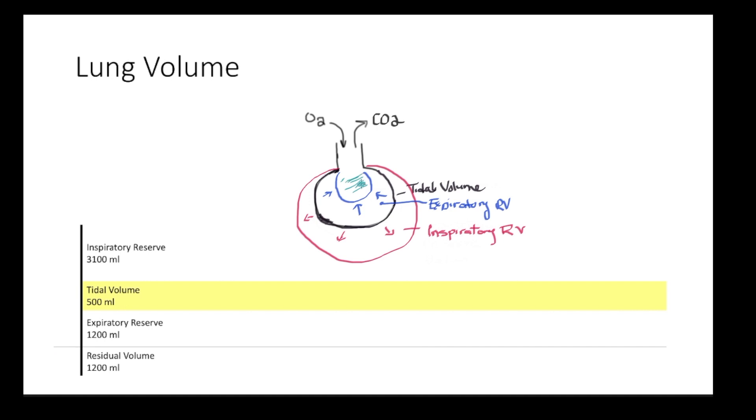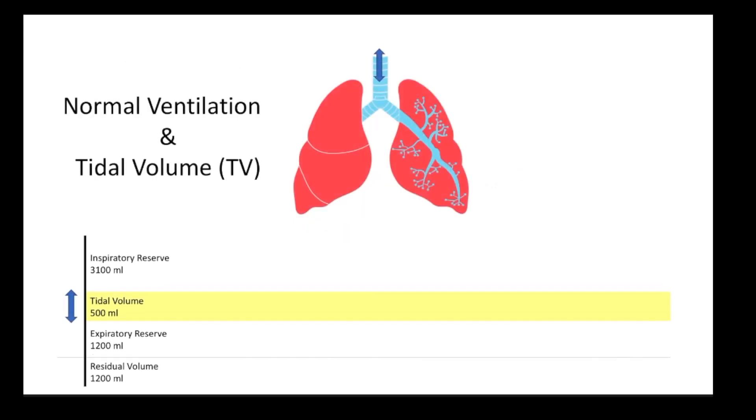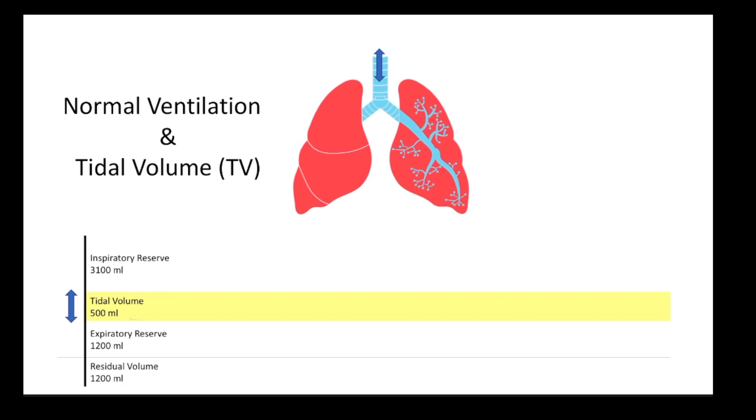All right, so no matter how hard you try you cannot breathe out all the air in your lungs, and that's because there's always a little bit left, and that's known as the residual volume. Collectively throughout the lung it totals up 1200 mils. Now that we understand the various volumes, let's look at the lung and the capacities in which it provides us. A capacity just simply means that we have the ability to do something.